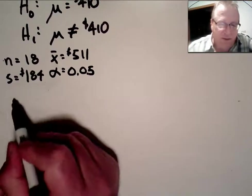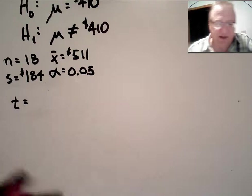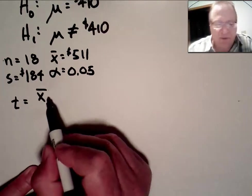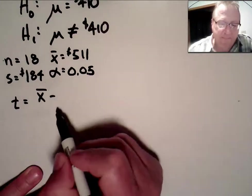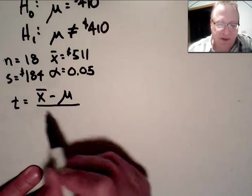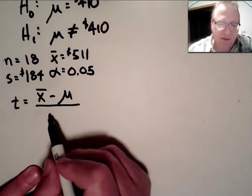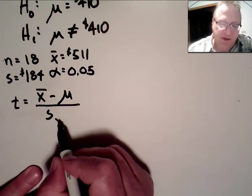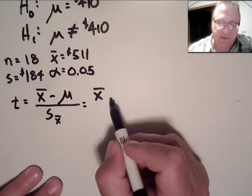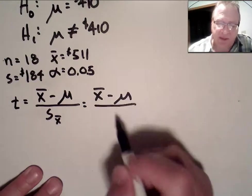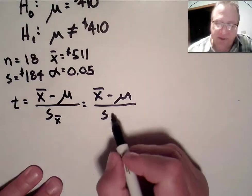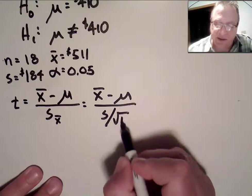How do we do that? Well, we've calculated t before. It's equal to the sample mean minus the proposed population mean divided by what's called the standard error of the mean. Sample mean minus population mean divided by... And the standard error is the sample standard deviation divided by the square root of n.